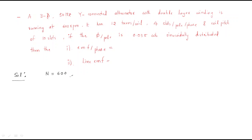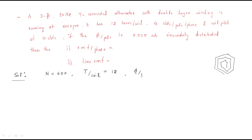The machine is running at N = 600 rpm. The number of turns per coil is 12 — a coil generally has multiple turns wound together, and here we have 12 turns per coil. The flux per pole is 0.035 Weber.